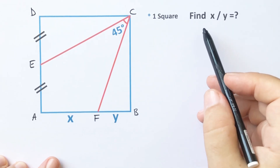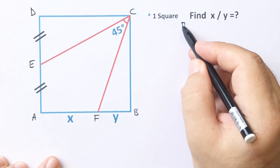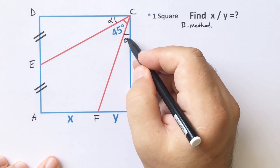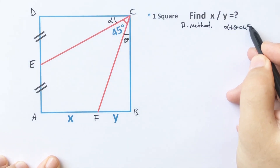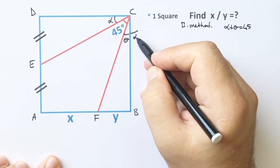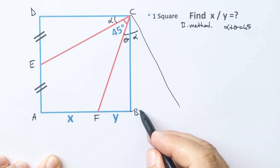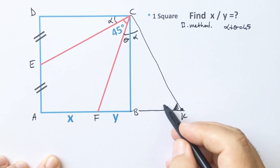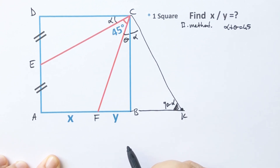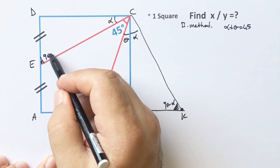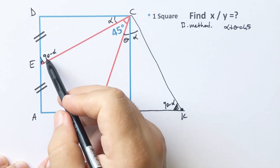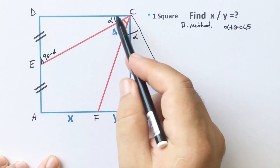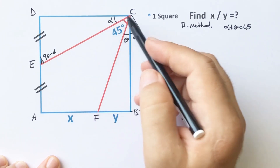Let's call here alpha and theta again. We know that alpha plus theta equals 45 degrees. If we check here alpha degrees, let's call this point K. If here is alpha, this angle must be 90 minus alpha. And if here is alpha, this angle is also 90 minus alpha.